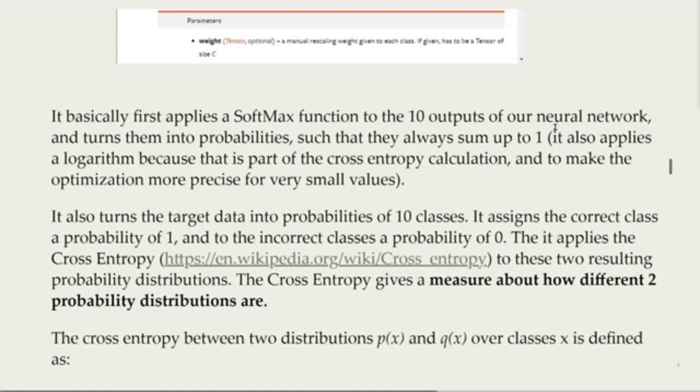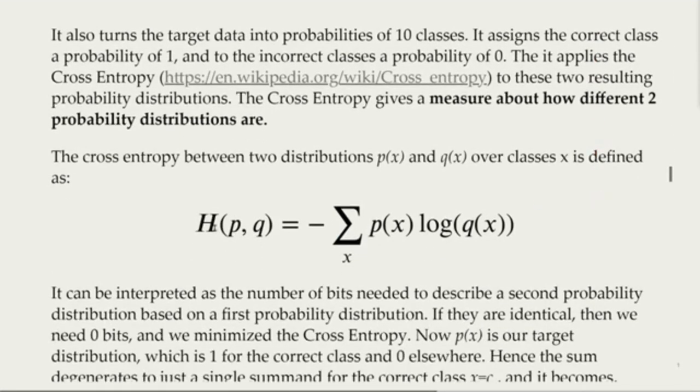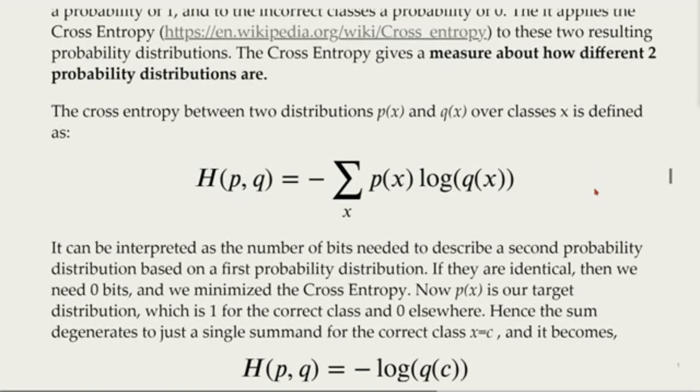The cross-entropy gives a measure about how different two probability distributions are. We see here that the cross-entropy between two distributions p(x) and q(x) over classes x is defined by this equation: H(p,q) = -sum of p(x) log(q(x)). It can be interpreted as the number of bits needed to describe a second probability distribution based on a first probability distribution.